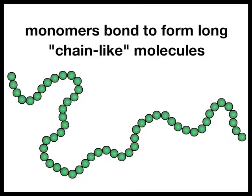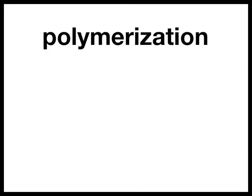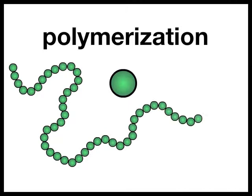First let's take a look at the vocabulary. Our first vocabulary word is monomer. Monomers are small molecules that react to form large chain-like molecules called polymers. Polymerization is the chemical reaction by which monomers are turned into polymers.